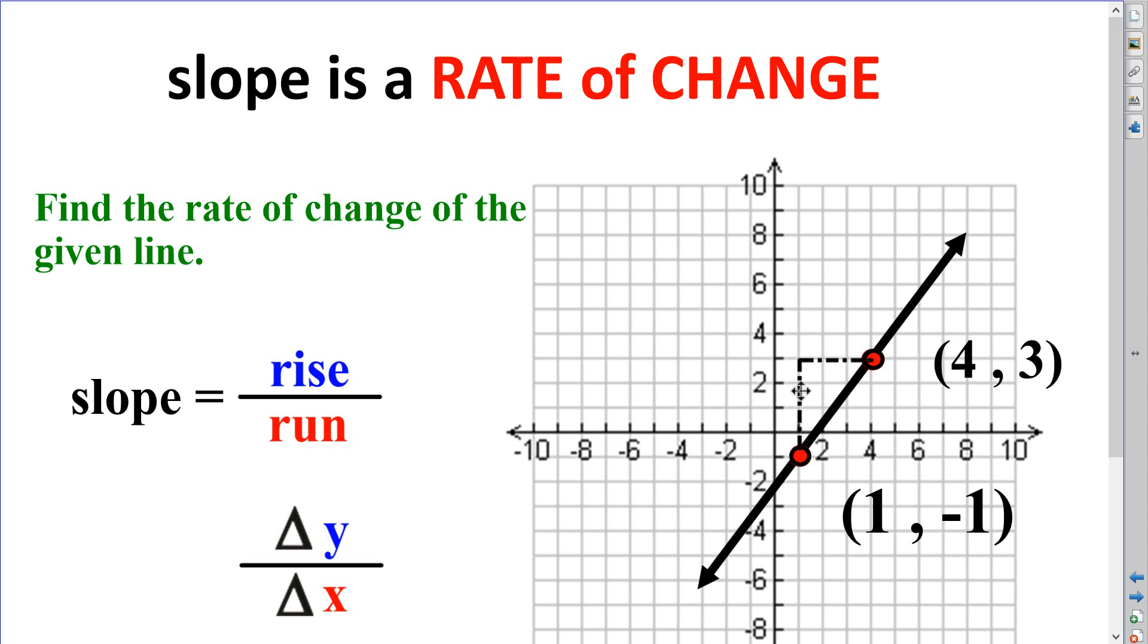So how many units I rise? 1, 2, 3, 4. And how many units I run? 1, 2, 3. That would be my rate of change: 4 over 3. Rise 4 units, run 3 units, you'll get to the next integer value. Rise 4 units, run 3 units, you'll get to the next integer value.